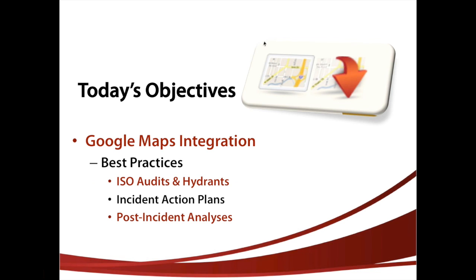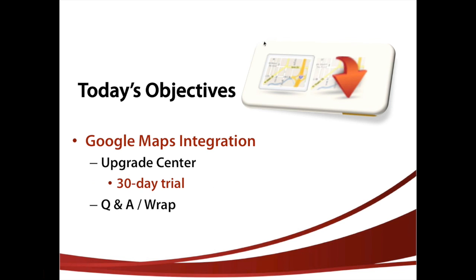One thing I want to mention: once you have good data in your occupancy module, hydrant module, and incidents — especially hydrants and occupancies — if you're an administrator, you have the ability to go into the administration module into the upgrade center. It's a button along the top bar. You can try out Google Maps for 30 days at no cost to see if it's something you're interested in. We'll take a peek at that, and then we'll have plenty of time for questions and answers. It should take us about an hour to get through everything.